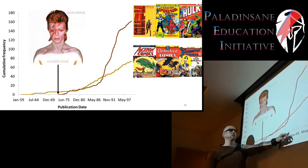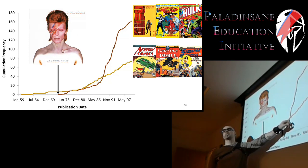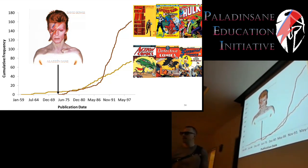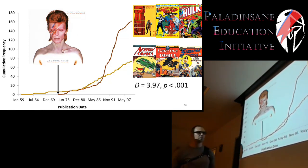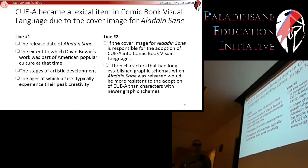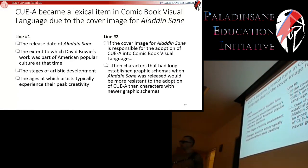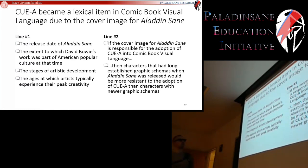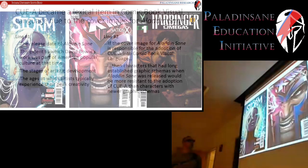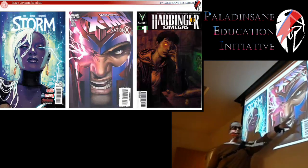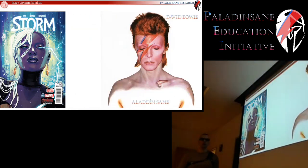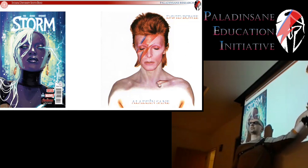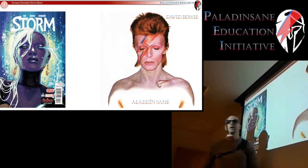And right here you can see that explosion in the use of close-up eye asymmetry — occurring in the 1990s when those artists reached their peak age. That difference is statistically significant. Those are the two lines of evidence arguing that close-up eye asymmetry is actually due to the release of Aladdin Sane — that this one image is where it all started.